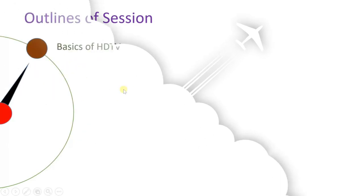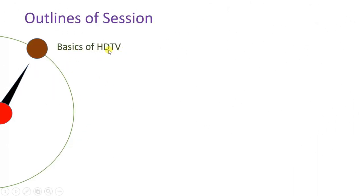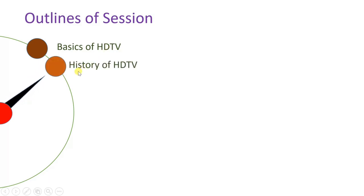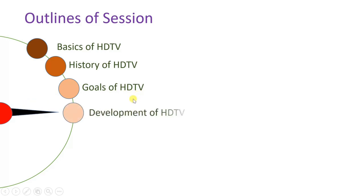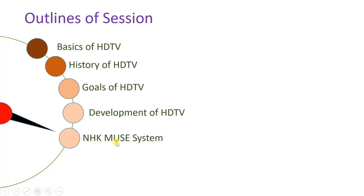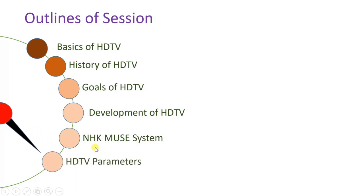To understand High Definition Television, here are my session outlines. First, I'll explain the basics of HDTV. Then I'll give a brief history of HDTV, followed by the basic goals of HDTV. I'll show how development of HDTV happened through Eureka as well as Japan's NHK MUSE system. After that, I'll explain parameters of HDTV, and at the end, I'll sum up by explaining the advantages of HDTV.